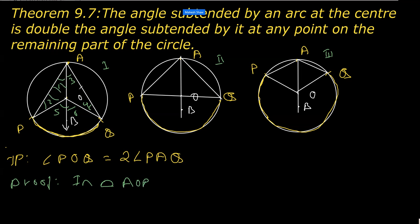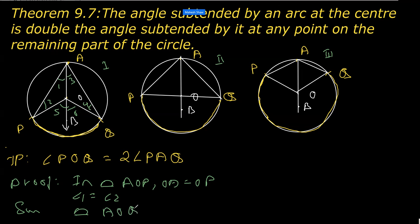In this triangle, as you can see, we have the radii OA equal to OP. So we can write angle one is equal to angle two. Similarly, in triangle AOQ, we can write angle three is equal to angle four.